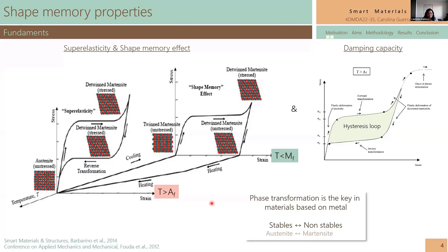What is the fundamental basis of the shape memory alloy? It all lies in the microstructure that you can achieve during the manufacturing process or by a heat treatment. As you see here, there are different kinds of shape memory properties — one of them is superelasticity, another is the shape memory effect, and the third is the damping capacity.